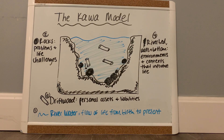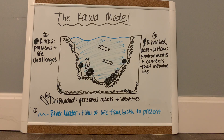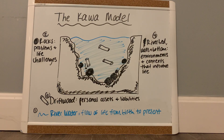The third element is the driftwood. The driftwood flows in the water and represents the client's personal assets and liabilities. These can help increase water flow by clearing rocks away, as shown on the left side, and create room for new pathways that make for better life flow. The driftwood can also add to the jams and create more barriers in the client's life.